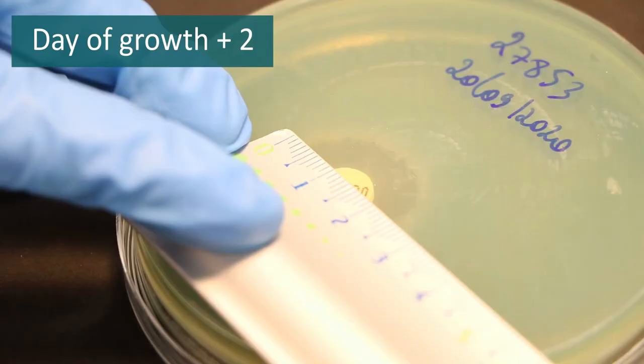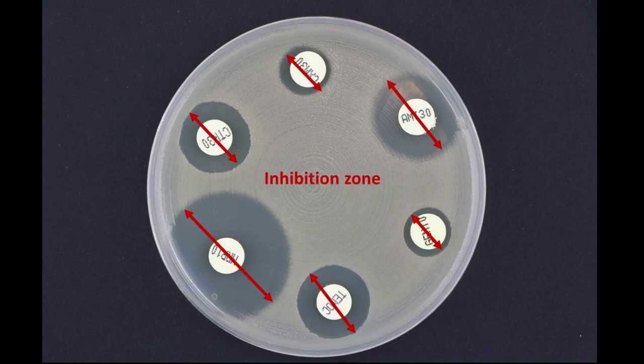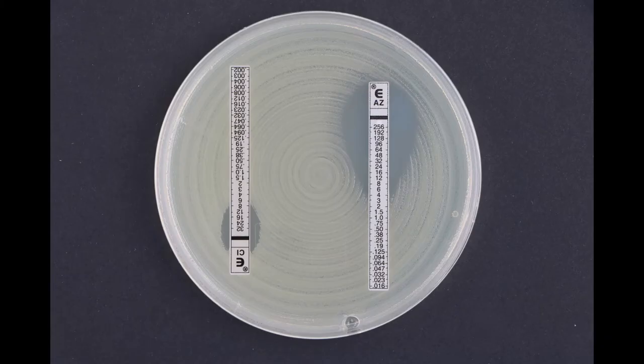After incubation, the diameter of the inhibition zone is measured. The diameter is a measure for the susceptibility of the bacterium to the antibiotic and is compared to break points in reference guidelines to define the susceptibility category.